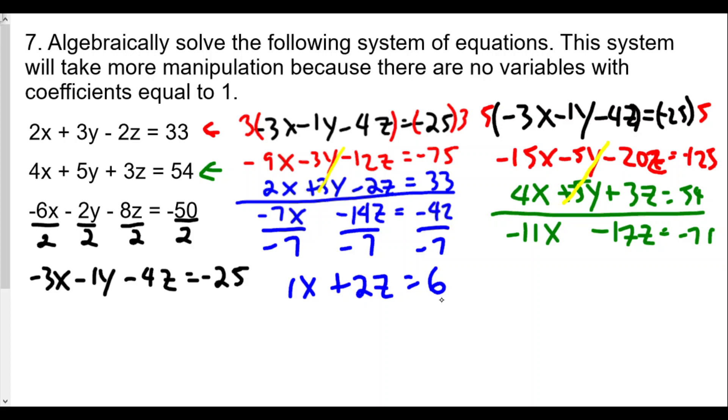We can manipulate again by multiplying this new equation by the opposite of negative 11, which is positive 11. Distributing will get 11x plus 22z equals 66. If we add downwards, the negative 11x and the positive 11x cancel out. And negative 17z plus 22z will give us a positive 5z. And negative 71 plus 66 will give us negative 5. Divide both sides by 5, we get z equals negative 1.